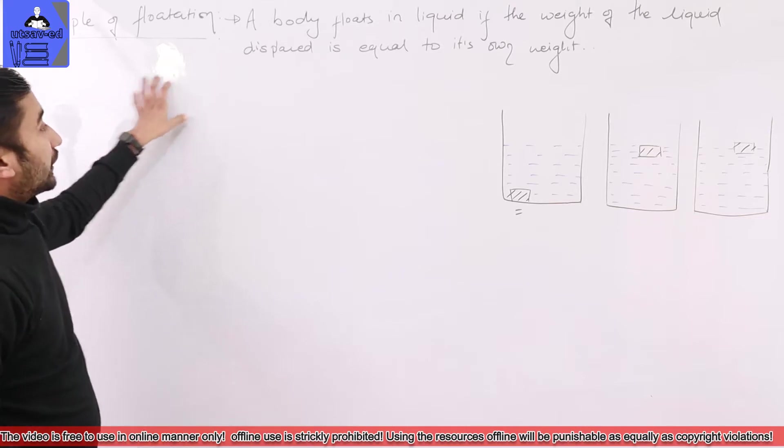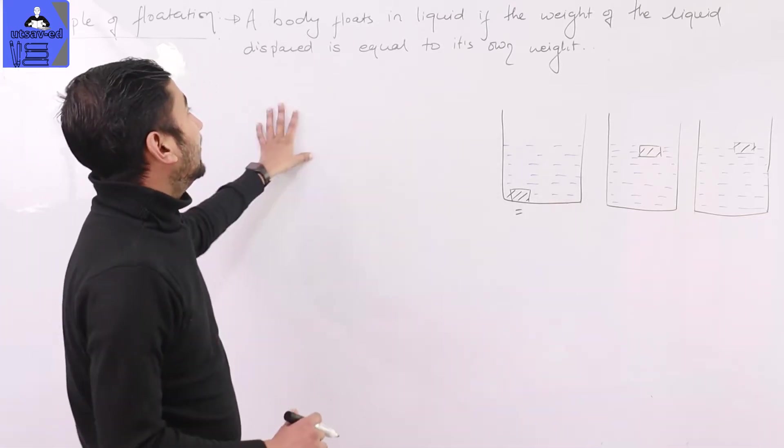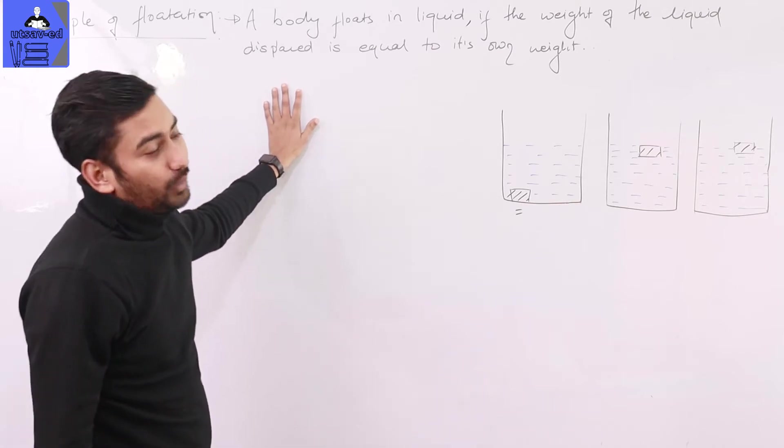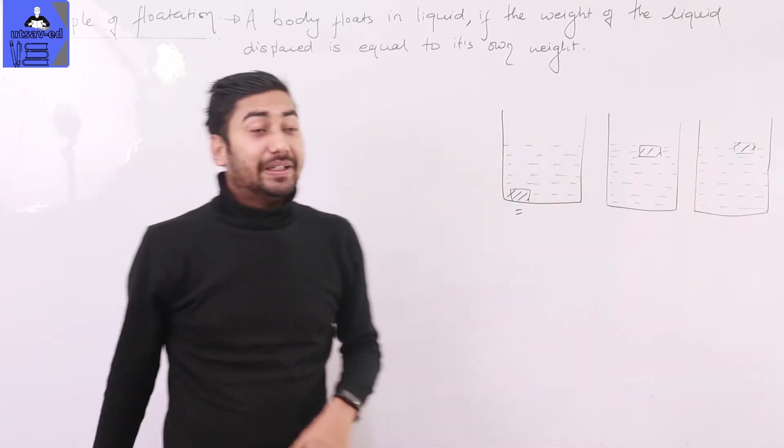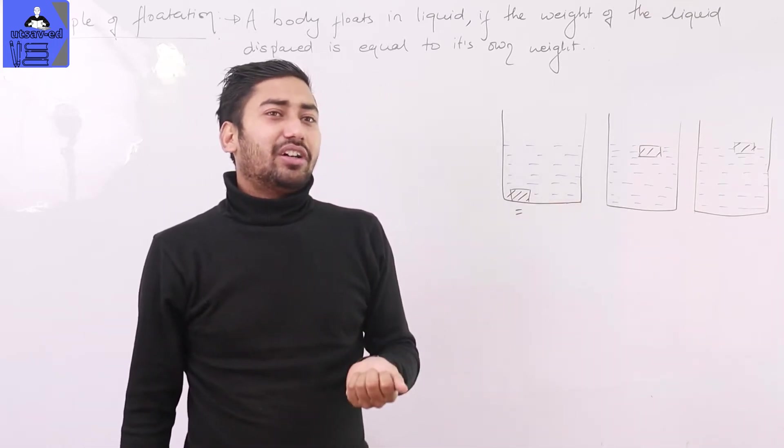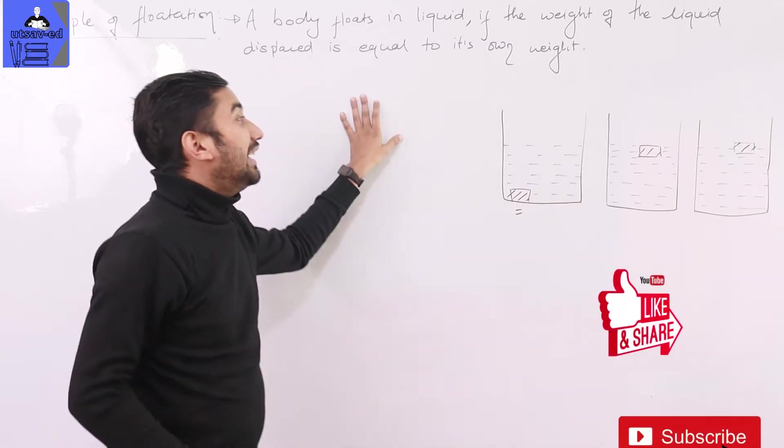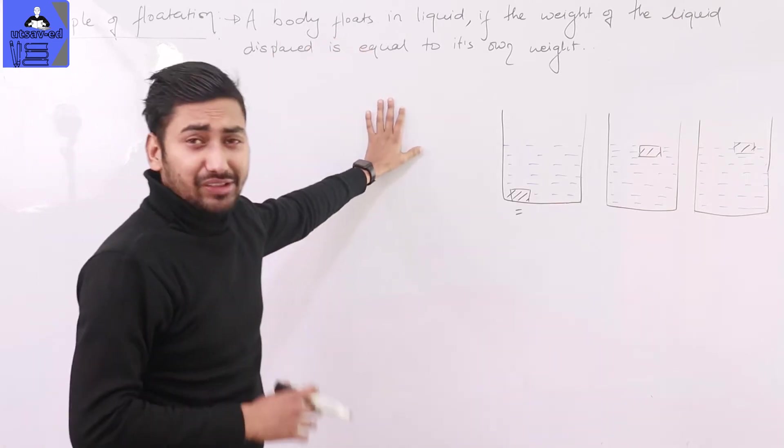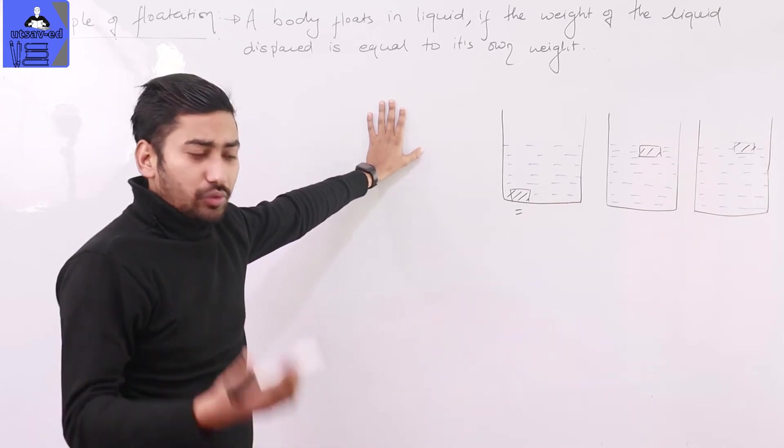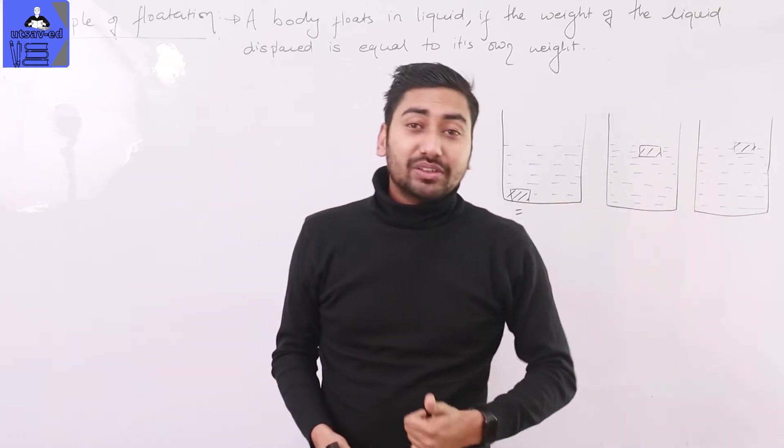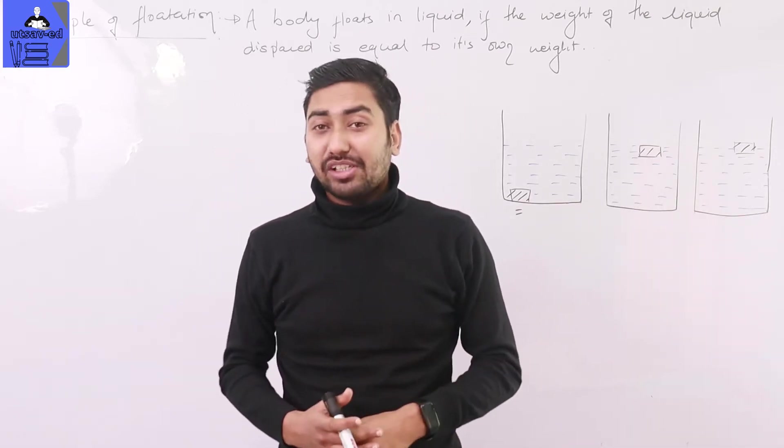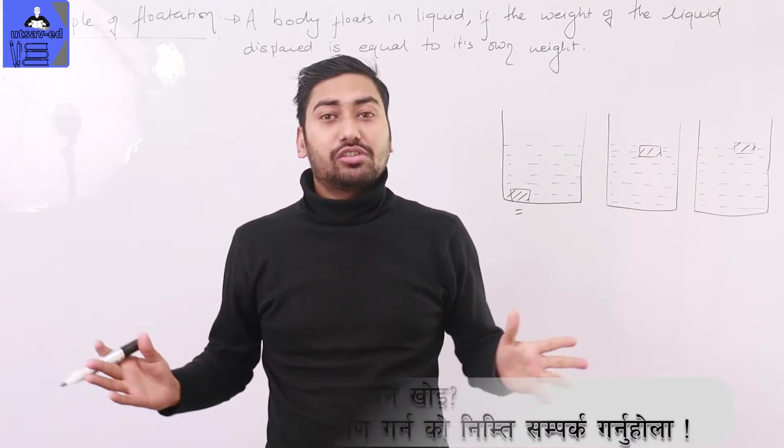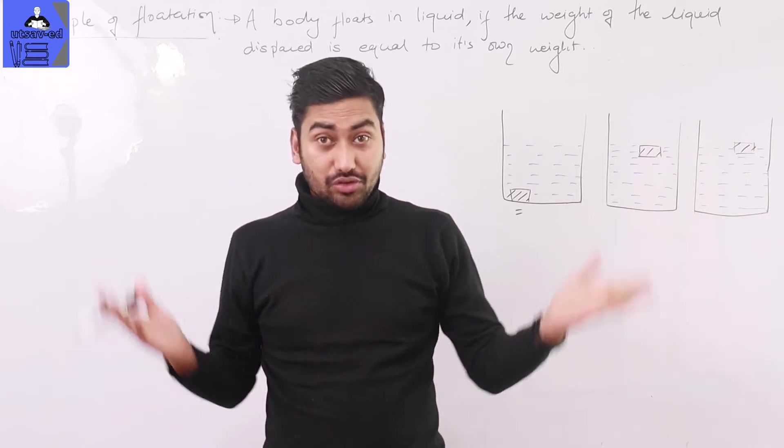What is the principle of floatation? The law of floatation states: a body floats in a liquid if the weight of the liquid displaced is equal to its own weight. In other words, if a body floats in a liquid, it displaces liquid equal to its own weight. For example, a ship made of iron floats because it displaces water equal to its own weight.